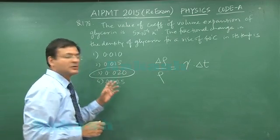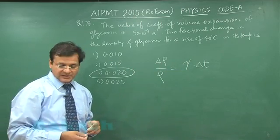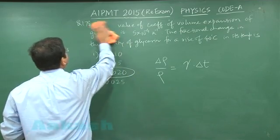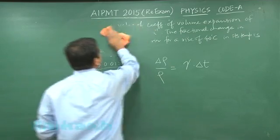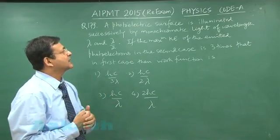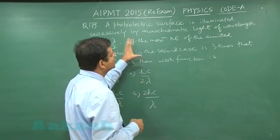is 0.02. This is the answer to question 178. Now switching to question 179. Question 179 is based on the direct formula of the photoelectric effect. You can have two situations here.